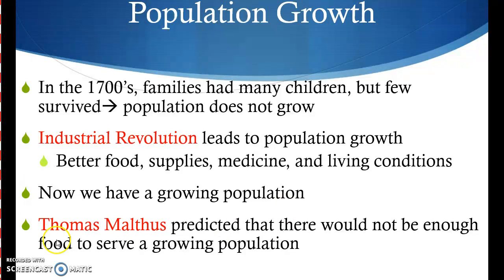We now have a famous philosopher — he's actually an economist — Thomas Malthus. Thomas Malthus writes a book and predicts that there's not going to be enough food, supplies, and resources to serve a growing population. He thinks that eventually there will be way too many people in the world and not enough food for them. It's kind of like the Hunger Games. He said eventually this is going to cause a problem, and only those fit for survival will be able to survive.